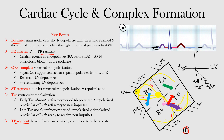Our sinus node fires an impulse, and then we have the internodal pathways — three of them: anterior, middle, and posterior — coming to our AV node. We also have one going over to the left side, which we call the Bachman bundle, depolarizing the left side of the atrium. So the sinus node fires, and all of this is occurring at that baseline level.